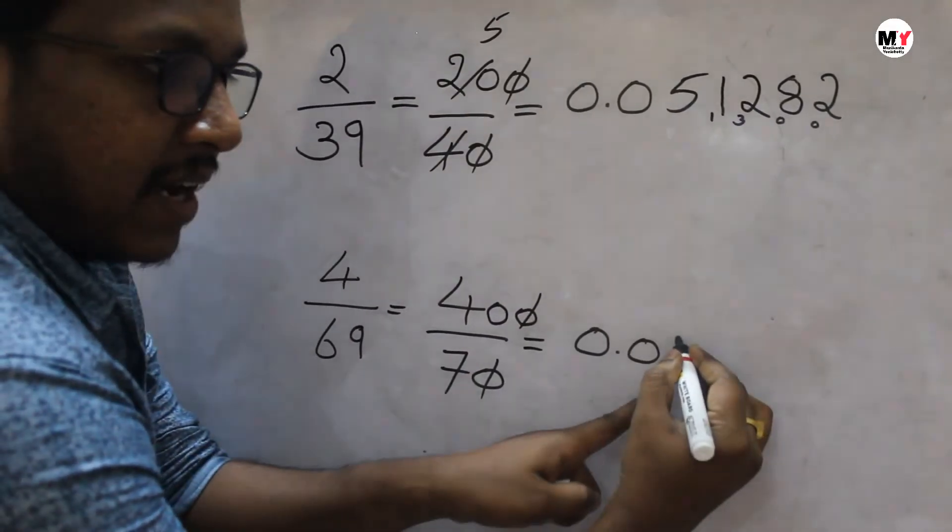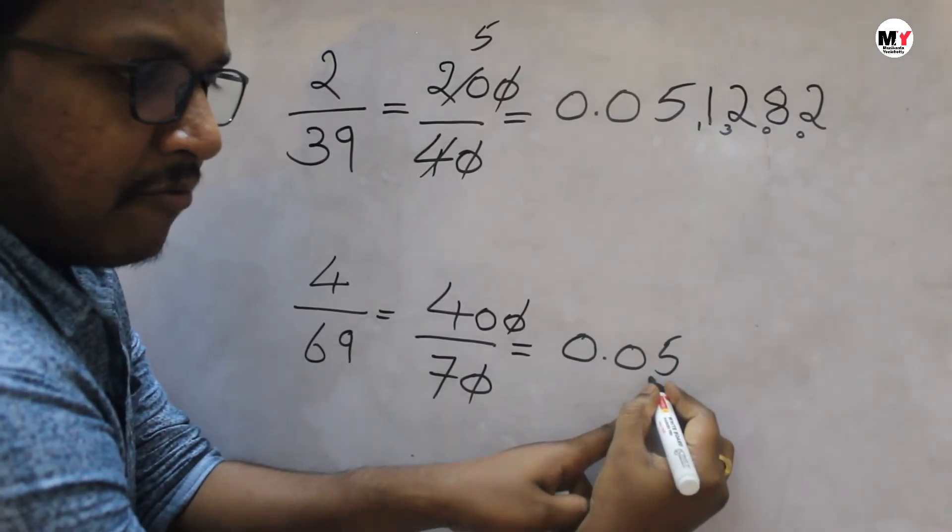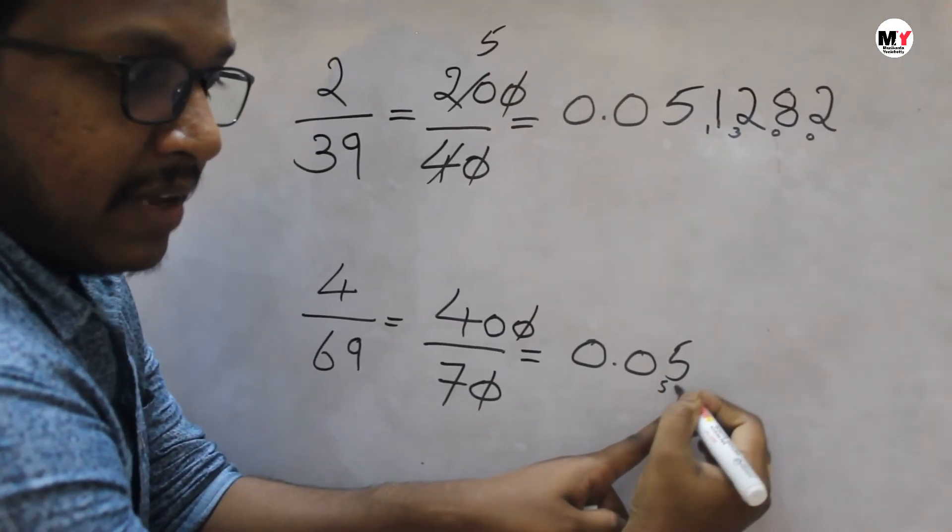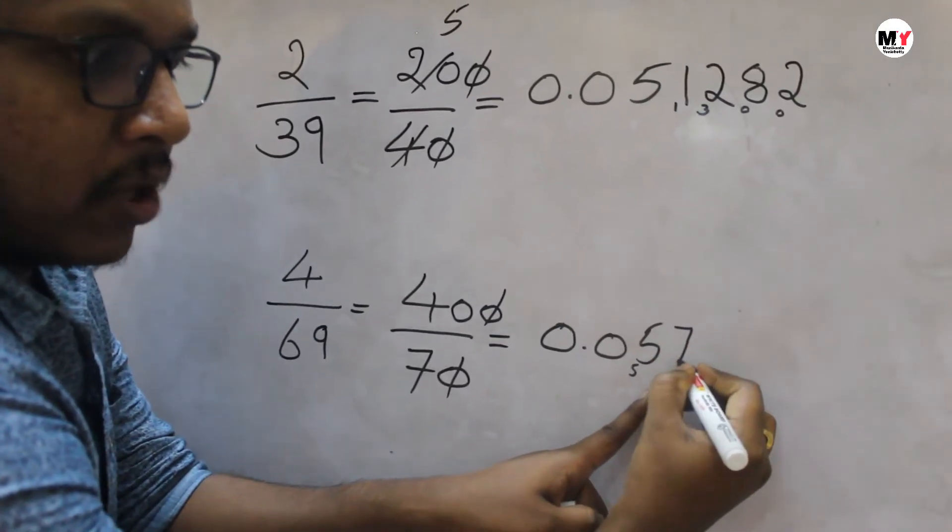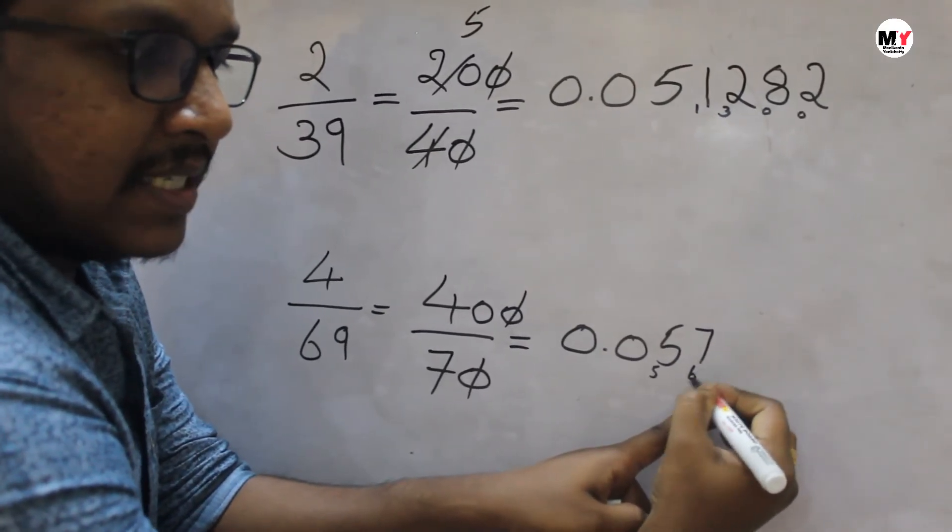7, 5's are 35. And what is the reminder? 5 is a reminder. Now the number became 55. 7, 7's are 49. Reminder is 6. Now the number became 67.